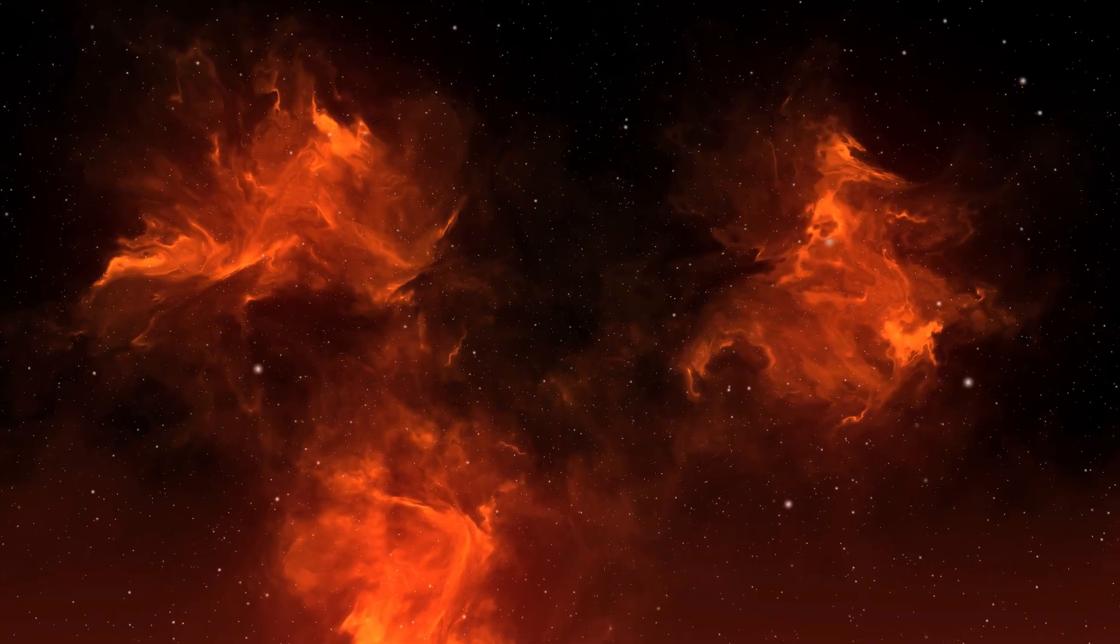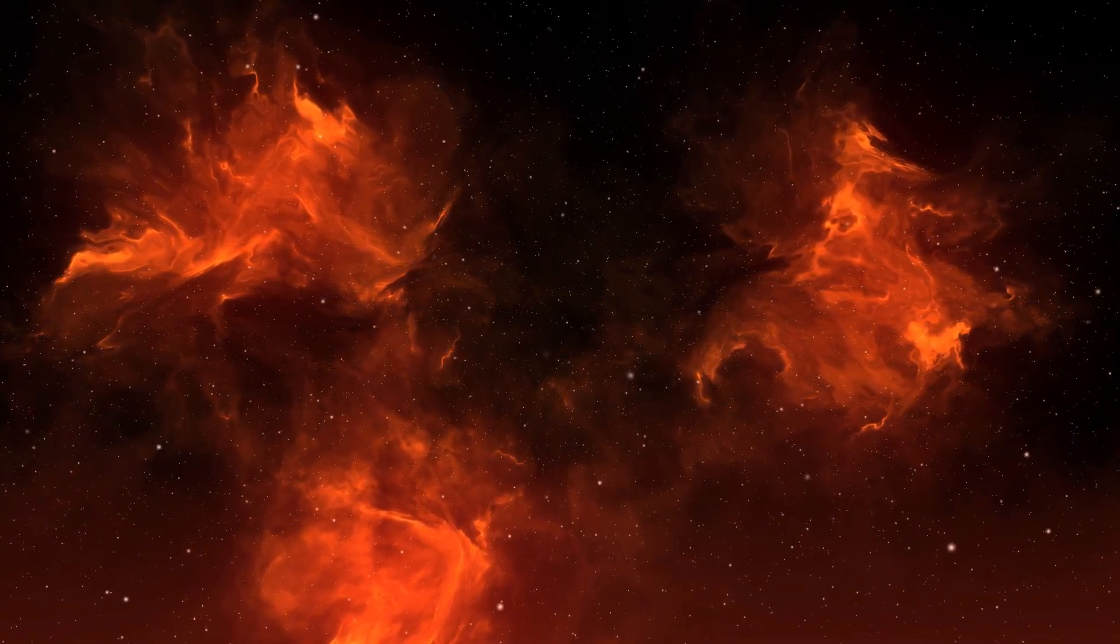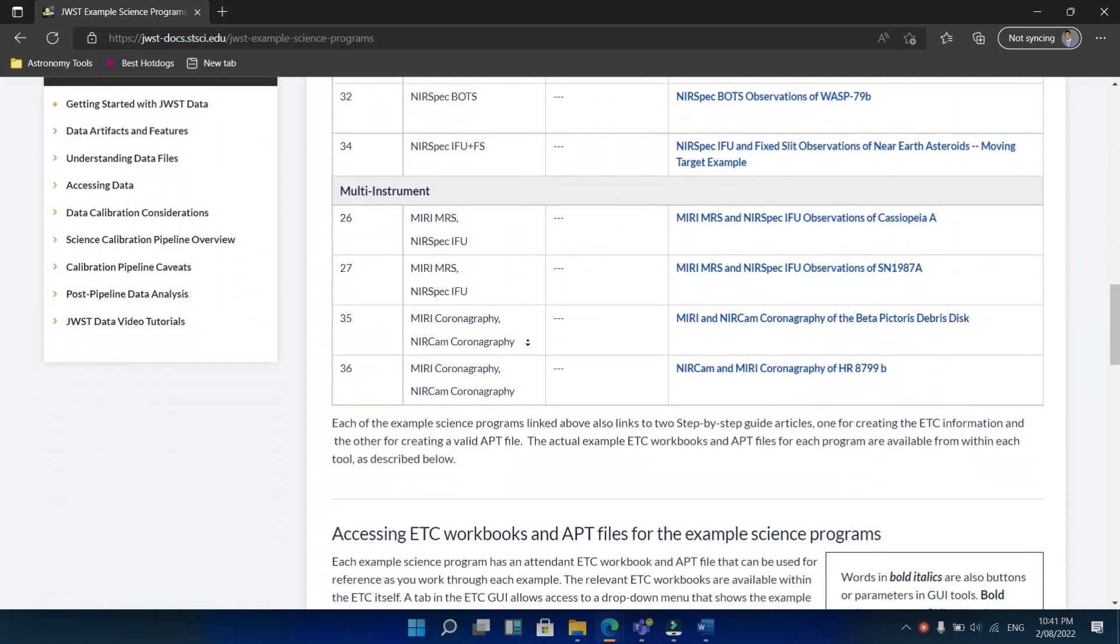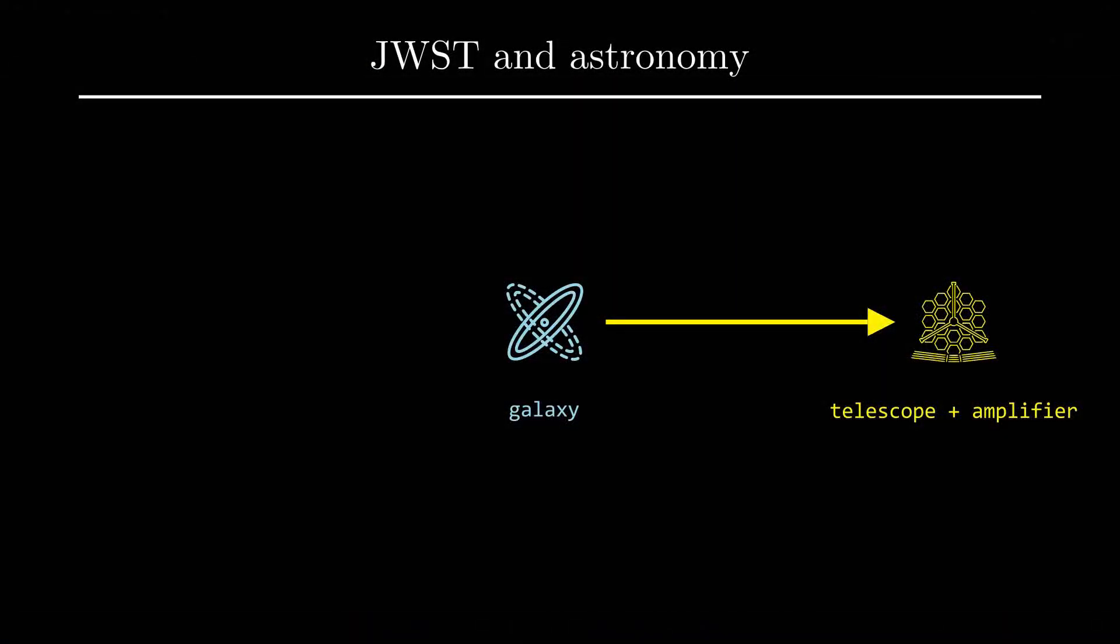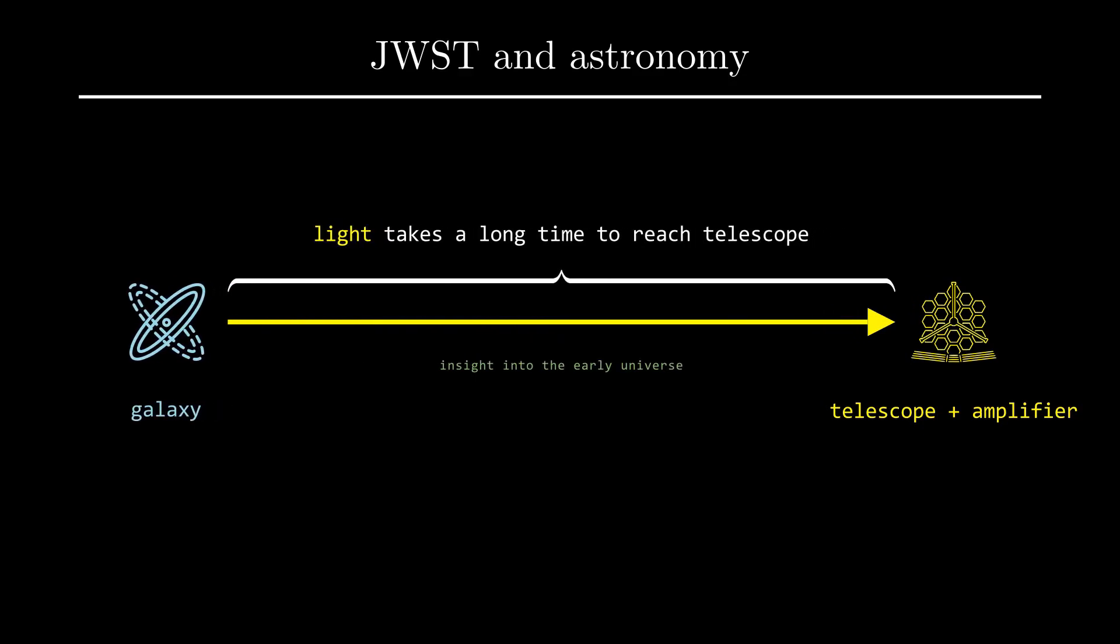Astronomers and other people alike are now looking forward and wondering what the JWST will be studying and capable of studying. There have already been many applicants and studies organized. The JWST is certainly designed to do many fascinating things. For one thing, the JWST can look at objects really far away. Since these objects are so far away, we see them as they were millions or even billions of years ago. This allows us to understand the very early universe.